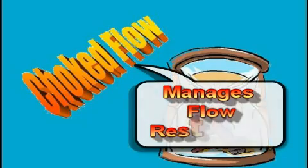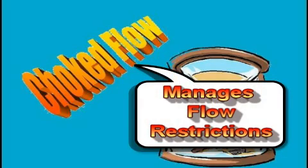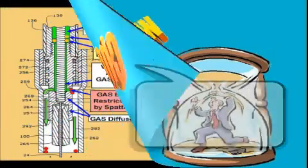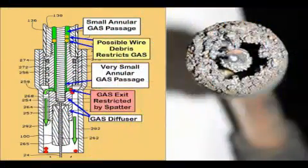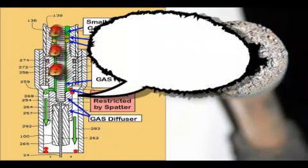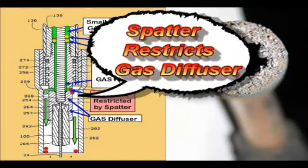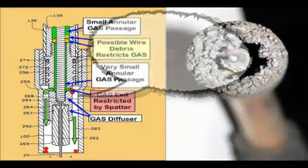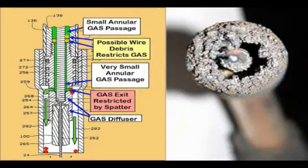This control system is called choke flow, where the pressure automatically changes to compensate for fluctuations in flow restrictions. It requires an excess of 25 PSI above the flow control orifice or needle valve to function. Flow restrictions occur when MIG welding due to spatter buildup in the nozzle, gas diffuser, and bends in the gun cable. The gas pressure typically varies from 3 to 8 PSI, but if set at this low pressure, variations in restrictions would change flow. Choke flow compensates for these restrictions.